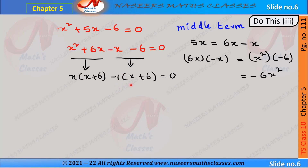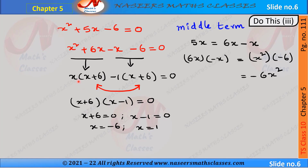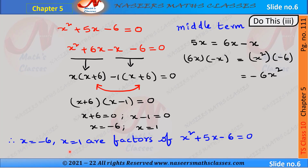In the next two terms, -1 is common, giving -1(x + 6). So the equation is x(x + 6) - 1(x + 6) = 0. Here x + 6 is common, so we get (x + 6)(x - 1) = 0, which gives x + 6 = 0 and x - 1 = 0. Transposing, x = -6 and x = 1. Therefore x = -6 and x = 1 are the roots of x² + 5x - 6 = 0.